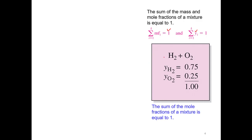For example, in the previous example with hydrogen and oxygen, the mole fraction of hydrogen is 0.75 and the mole fraction of oxygen is 0.25. Adding them up gives 1, confirming that the sum of all mole fractions equals 1.